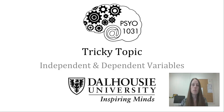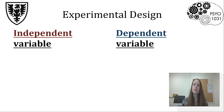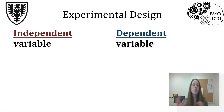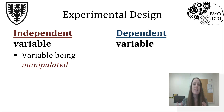The second characteristic of an experiment is the one we're going to mainly focus on within this tricky topic, and that has to do with manipulating and measuring variables. We're going to talk about independent and dependent variables. When we talk about an independent variable, that's the variable — the thing that we're actually manipulating. It's the thing that we're changing in some way.